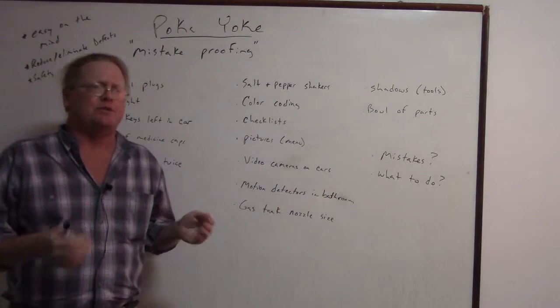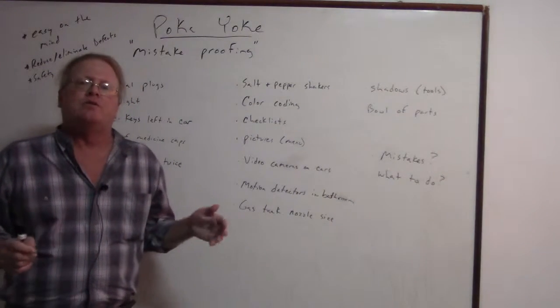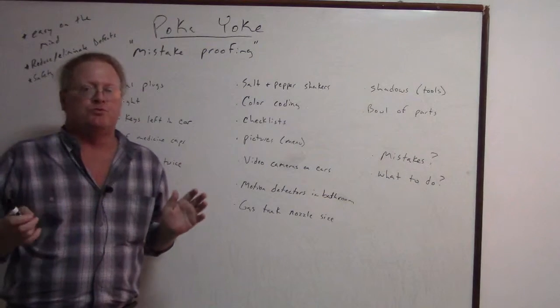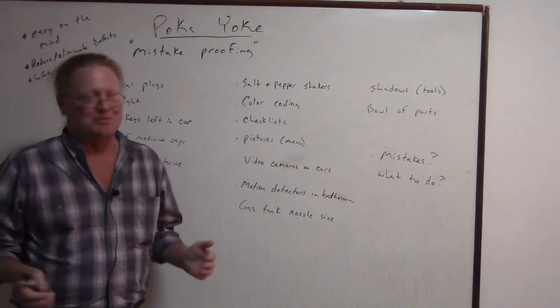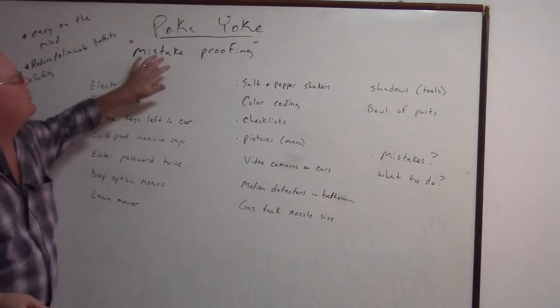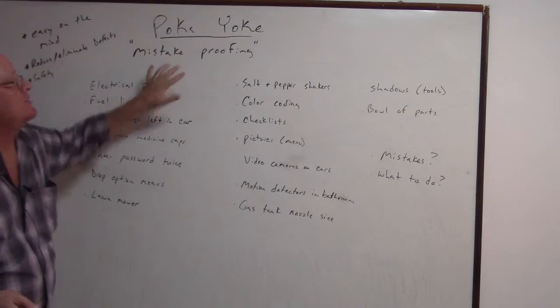In the beginning they had a different term in Japanese that was foolproofing, but that offended a lot of people, so they changed it to poka-yoke and mistake proofing.